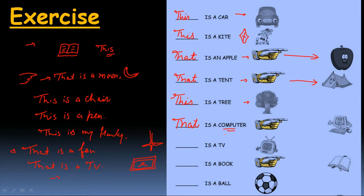नज़दीक — TV — ठीक है — पास के लिए क्या use करेंगे? 'This is a TV'। एक book है — 'that is a book' — दूर है ना बिटा? पास है? बोलो — पास के लिए क्या use करेंगे? 'This is a book'। इस इस प्रकार की worksheet घर पर बना कर भी practice कर सकते हैं, ठीक है बिटा।